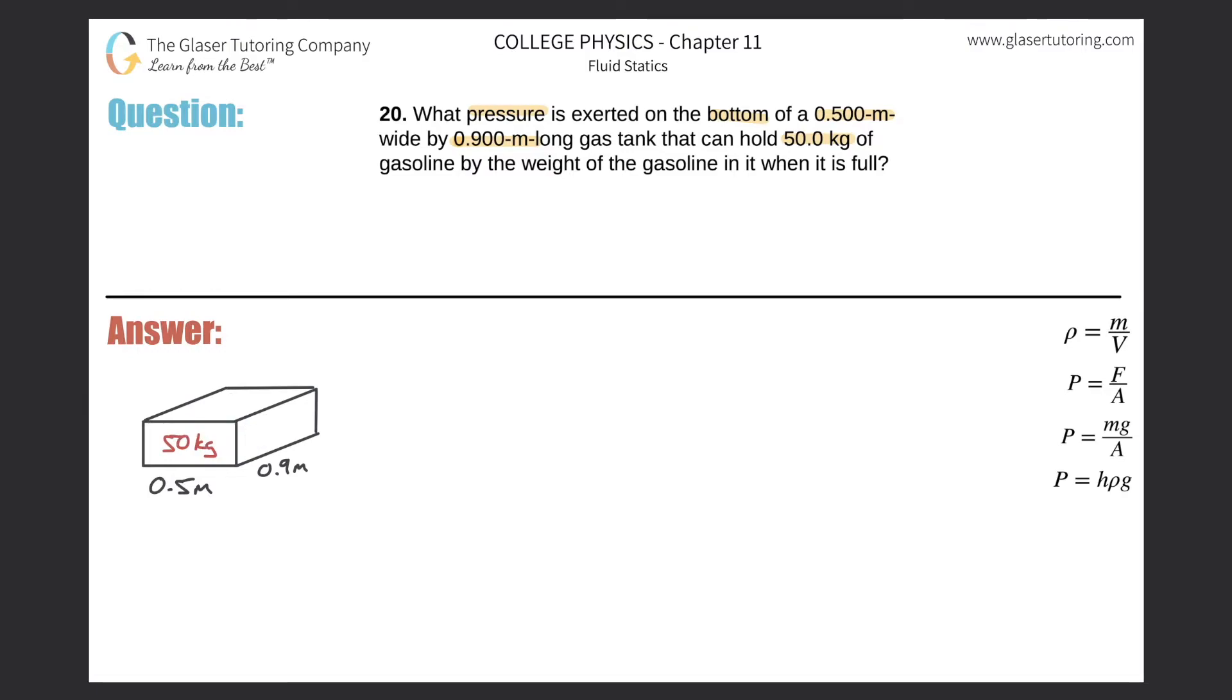So we want to find the pressure on the bottom. Now remember the bottom surface is basically equivalent to this surface at the top. Notice this is rectangular, so to find the pressure on a rectangular surface we're thinking about using this particular formula.